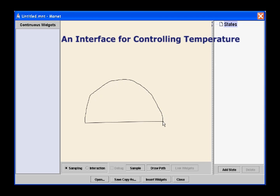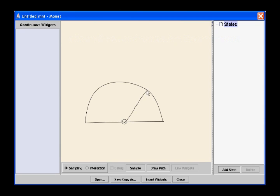We here give an example of prototyping an interface for controlling room temperature. A designer wants a user to be able to set a temperature by dragging the needle of a dial. To do so, a designer first designs a dial in Monet by drawing it.